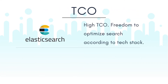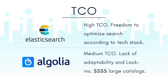Finally, we will talk about the total cost of ownership of the two technologies. Building in-house search with Elasticsearch has a high TCO thanks to the time and resources businesses need to allocate for training, development, and maintaining the search. That being said, the biggest benefit is that you can optimize your search to work alongside the rest of your technology stack. On the surface, Algolia would seem to have a lower TCO, but introduces a lack of adaptability and lock-ins that can hamper some businesses.